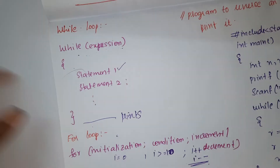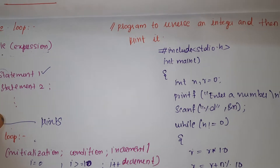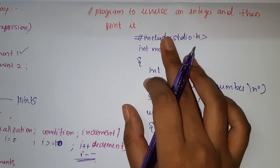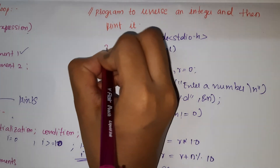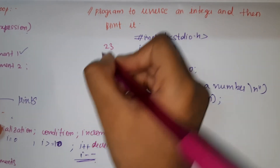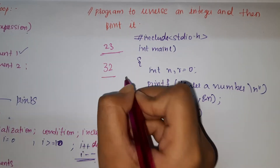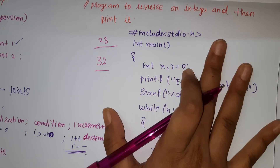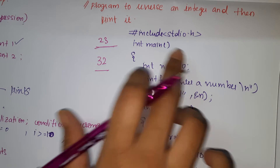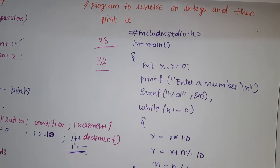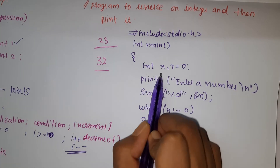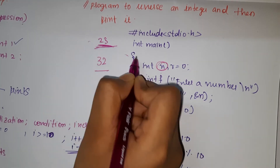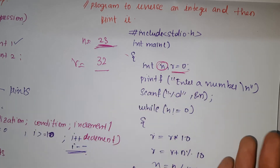Now I'll give more examples so you clearly understand. Here we have a program to print the reverse of an integer. Suppose the number is 23 — I want to print 32. I want the computer to give me 32. So we write: hash include stdio.h, int main, header files, declaration. Here we declare int n, and r equals zero. n is the number we are entering — here n is 23.